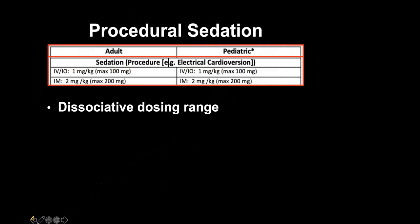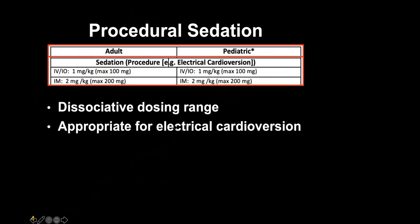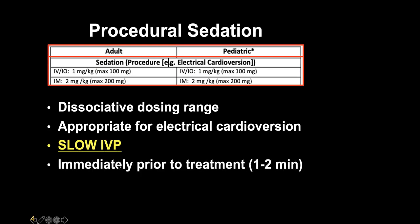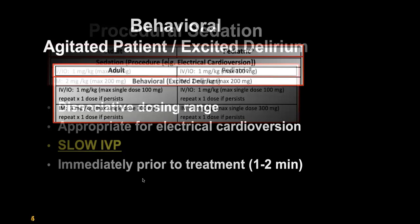Procedural sedation for us will largely be electrical cardioversion. We are purposely in the dissociative dosing range to produce sedation, lack of awareness, and significant pain suppression. This is very appropriate for cardioversion — I have used it in hospital for patients in VTach with a pulse who are unstable, as well as PSVT, with good results. Slow IV push to avoid apnea. Give it about one to two minutes before with IV, or about two minutes before with IM, so the full drug effect is present before the procedure.